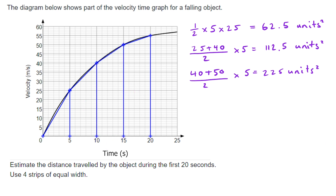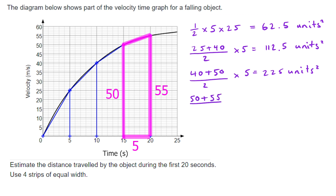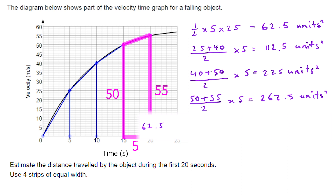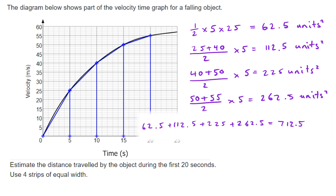The final trapezium also has a width of 5, with heights of 50 and 55. The average of those two is 52.5, multiplied by 5 gives an area of 262.5. Adding all the areas together gives a total of 712.5, so the estimated distance traveled is 712.5 units.